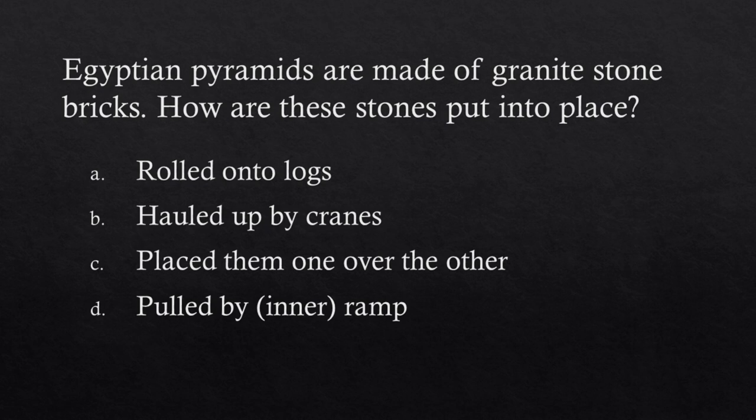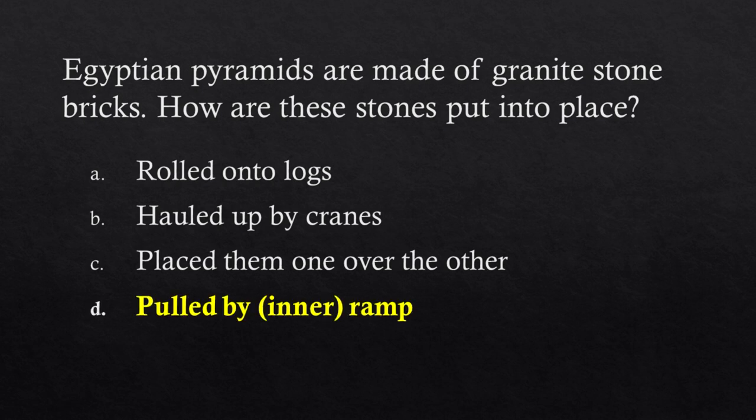Egyptian pyramids are made of granite stones. How are these stones put into place? Choices: Rolled onto logs, Hauled up by cranes, Placed one over the other, Pulled by inner ramp. Answer: Pulled by inner ramp.